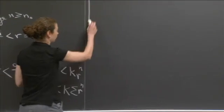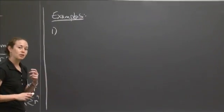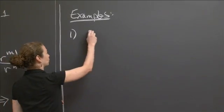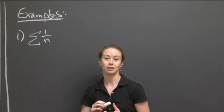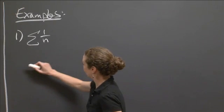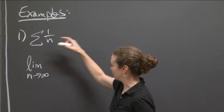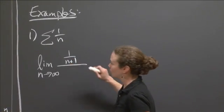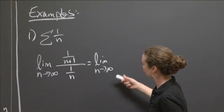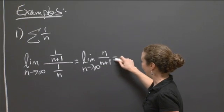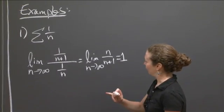Now let's get some examples. Example one: let's look at 1 over n. Let's use the ratio test on 1 over n. We know it diverges, but let's check what the test tells us. The limit as n goes to infinity: the n plus first term is 1 over n plus 1, and the nth term is 1 over n. So we get the limit as n goes to infinity of n over n plus 1, and that equals 1. So this one didn't tell us anything.